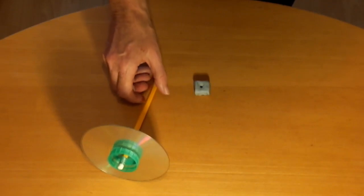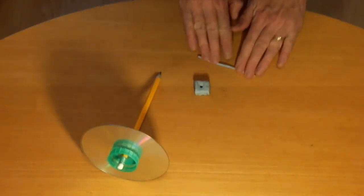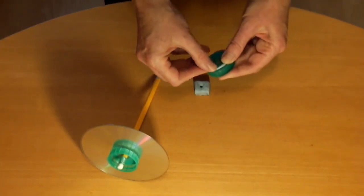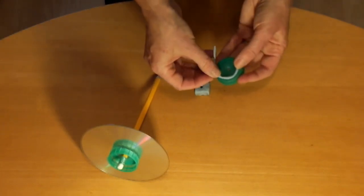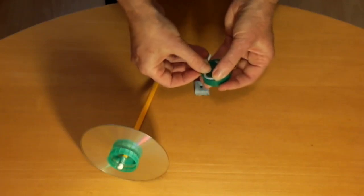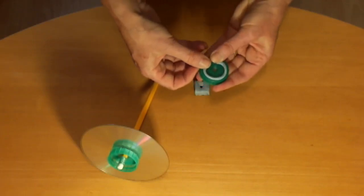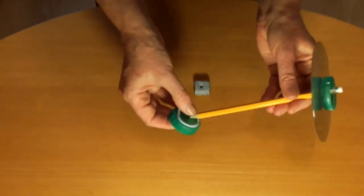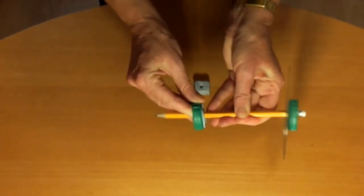Slide the CD along the pencil and squeeze the CD and bottle lid together to squash the blue tack. Roll a second piece of blue tack and attach this to the other bottle lid. Push this bottle lid along the pencil to the CD and squeeze the two bottle lids together.